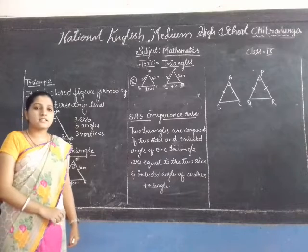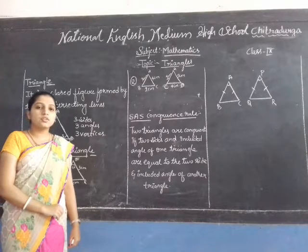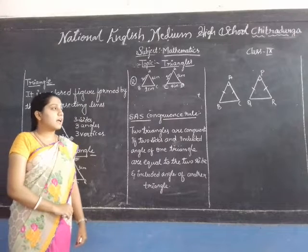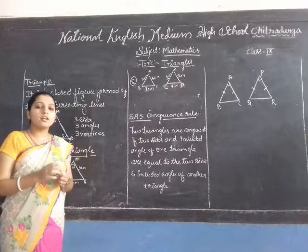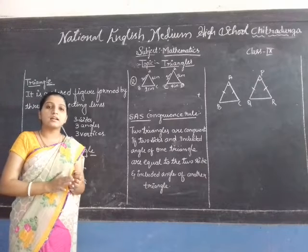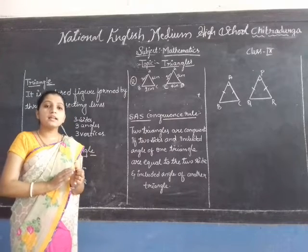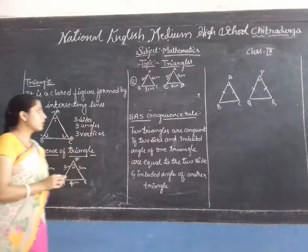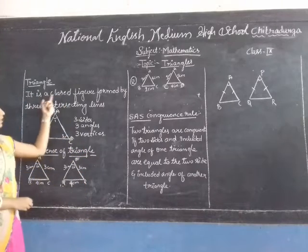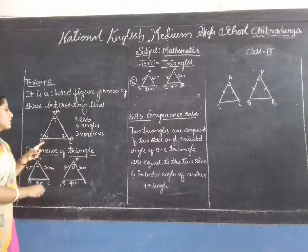Good morning, my dear students. Once again, welcome to online classes of mathematics. Today we shall start the chapter on triangles for class 9. A triangle is a closed figure formed by three intersecting lines.